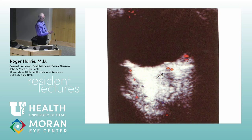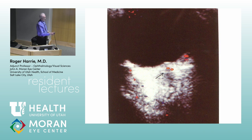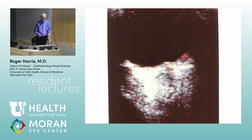Giant cell arteritis is devastating — it wipes out all blood flow. The pelvic artery, central bone artery — the entire orbit is essentially dead. That's why it's so terrible to get giant cell arteritis, and 40% will go blind in the other eye within a couple of weeks. That's why it's critical to make the diagnosis promptly and institute proper therapy.